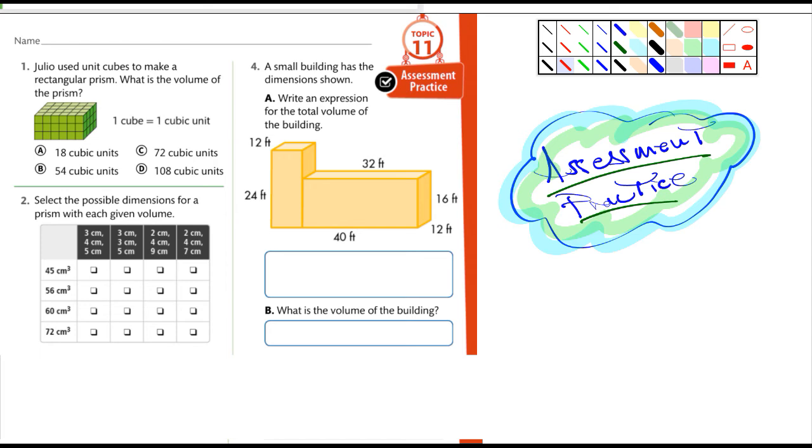So I'm looking at these and I'm looking at number one here. Julio used unit cubes to make a rectangular prism. What's the volume of the prism? You should be able to do that one.